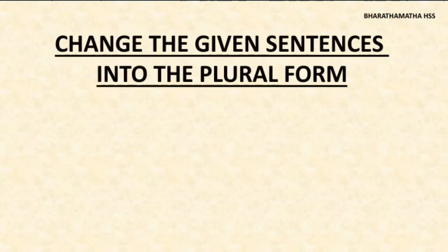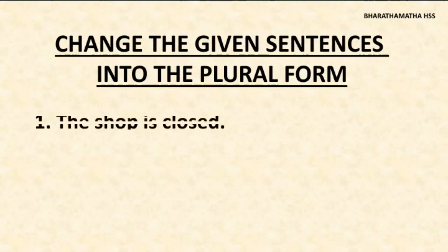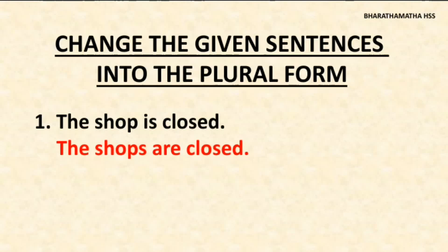Change the given sentences into the plural form. We have already learned the plural form of some words. Let's now see how sentences are changed into the plural form. The first sentence is: the shop is closed. The plural form of the word shop is shops. But we have to make one more change — the verb is will be changed to are, because is is always used with singular nouns and are is used with plural nouns. So the answer will be: the shops are closed.